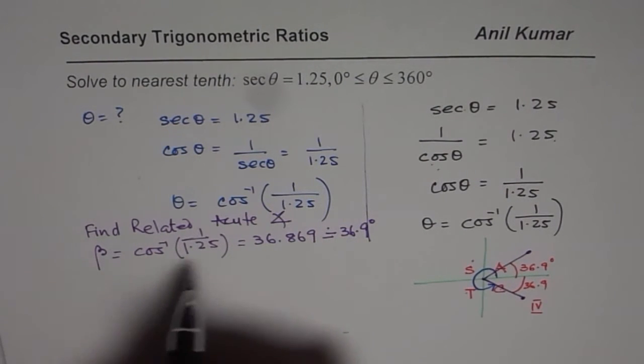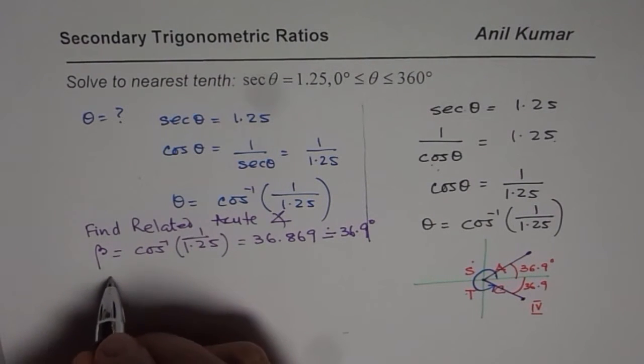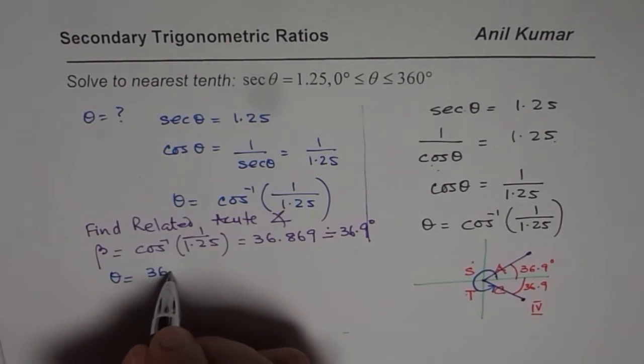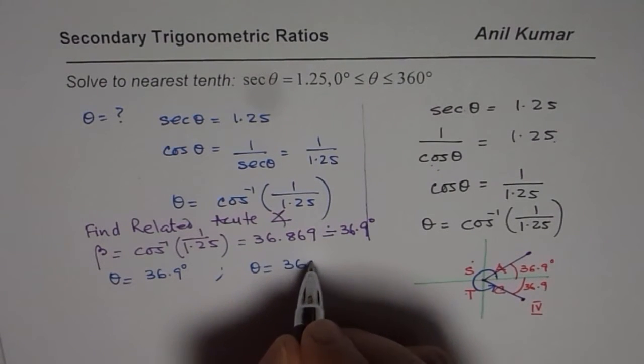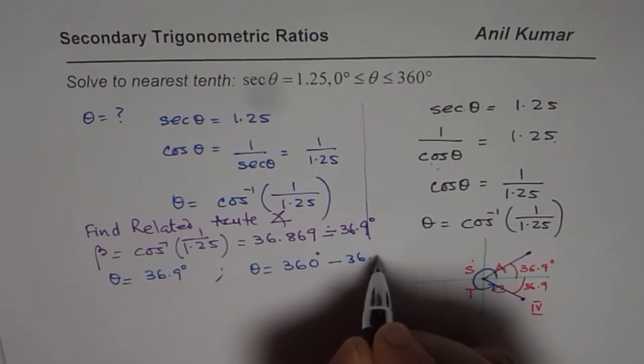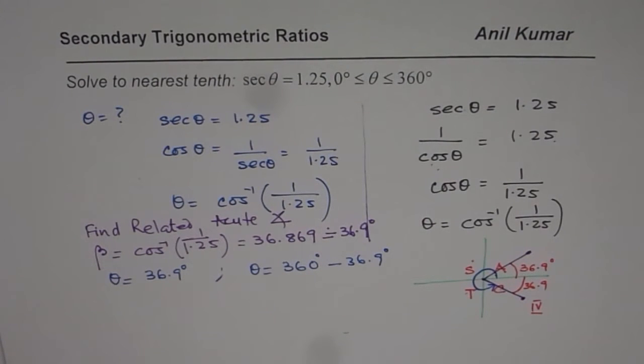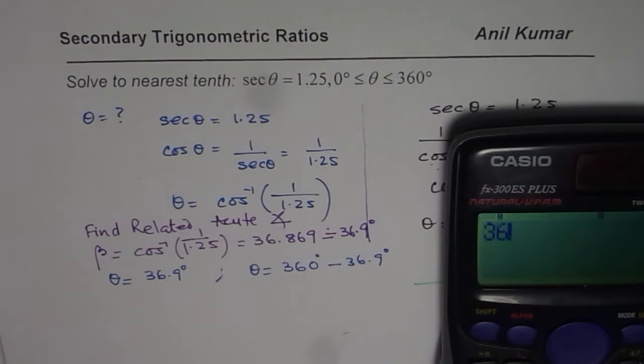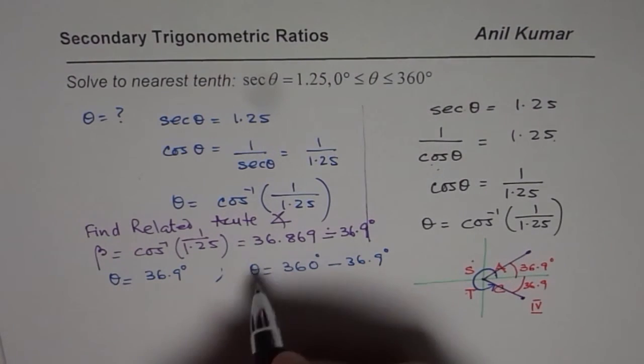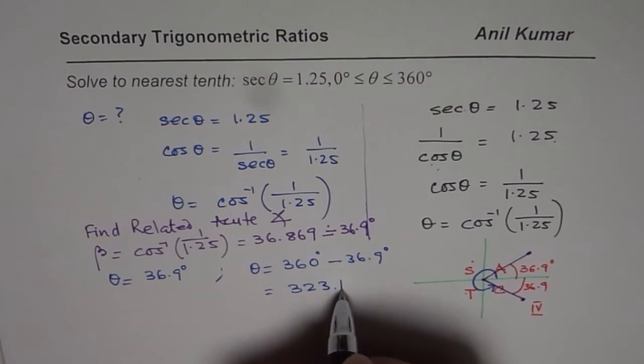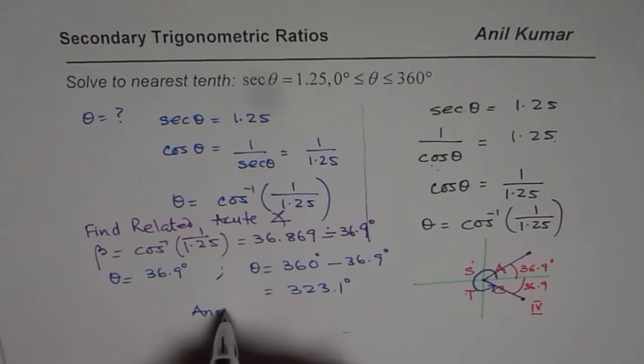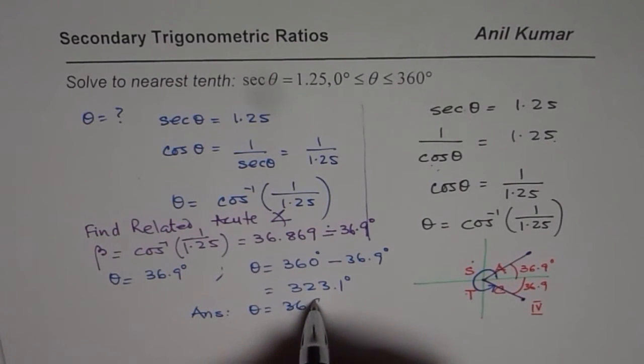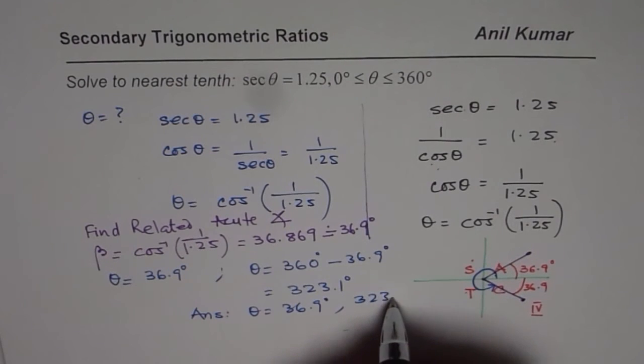So we have two solutions, and those are the angle theta which we have to report. So we get theta equals the acute angle, 36.9 degrees, as we found. And the other one is theta equals 360 degrees minus 36.9 degrees. So let us do 360 minus 36.9 equals to, in decimals, 323.1. So we get 323.1 degrees. So these are the two solutions for us. So the solution is theta equals 36.9 degrees and 323.1 degrees.